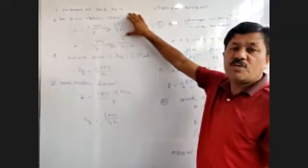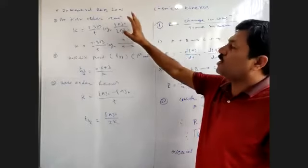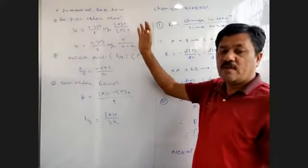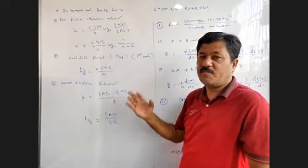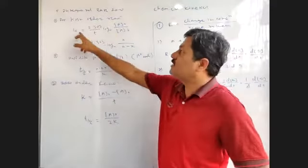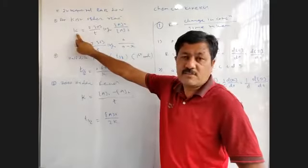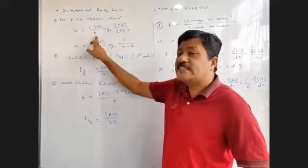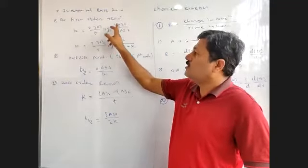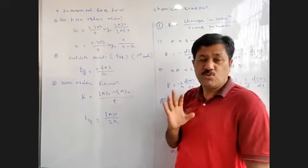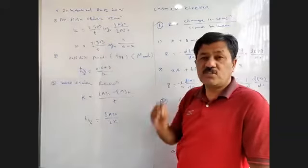The integrated rate law is used to calculate the concentration of reactant at a given time. K is equal to 2.303/t × log(A₀/Aₜ). K is the rate constant of the reaction, t is the time, and A₀ is the initial concentration of the reactant. Aₜ is the final concentration remaining after time t.